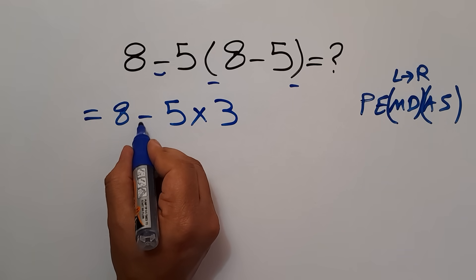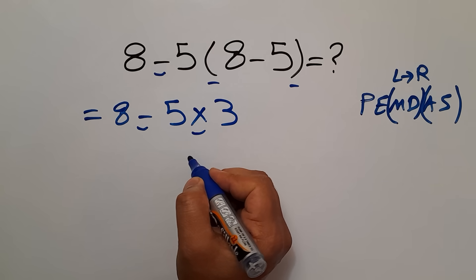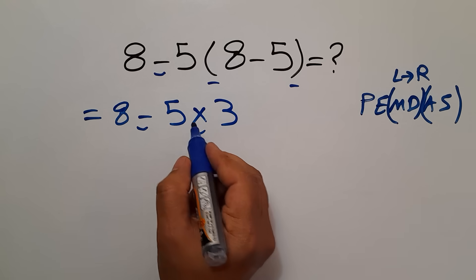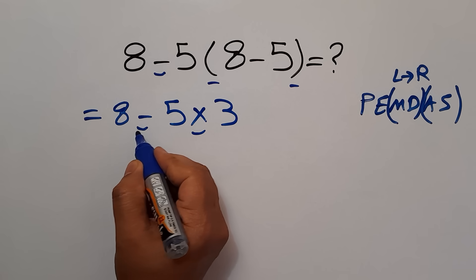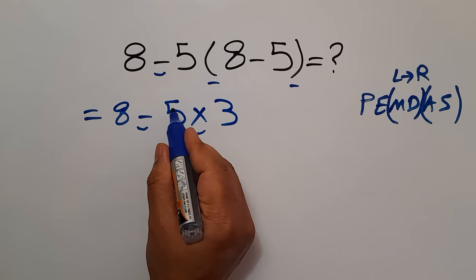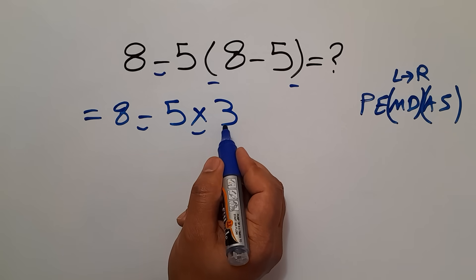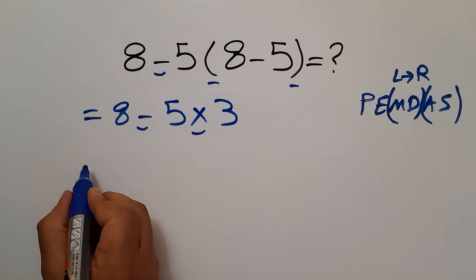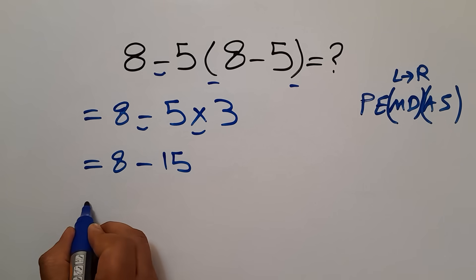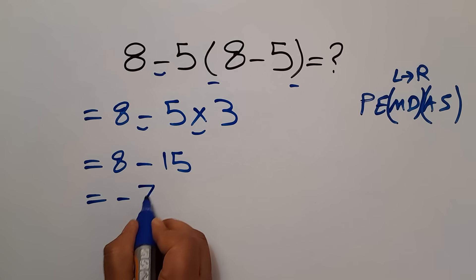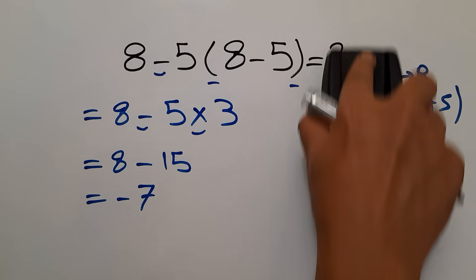Now, we have this subtraction and this multiplication. According to PEMDAS, multiplication has higher priority than subtraction. So, we have to do this multiplication first. 5 times 3 equals 15. So, 8 minus 15, and this is equal to negative 7. Our final answer to this problem is negative 7.